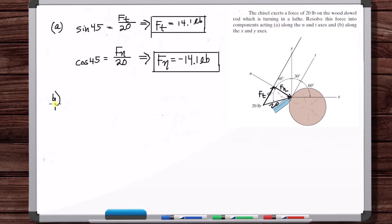Okay, now part B, find the components along the X and Y axes. So we can just slide this force over here. So there's the force, and we just need to find this angle or this angle. Well, here's how you can analyze this. Look at this N T.